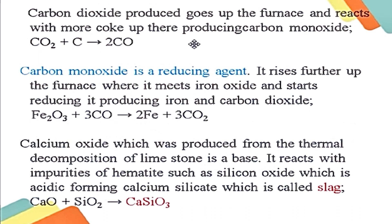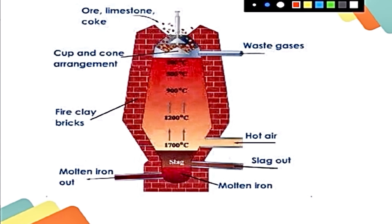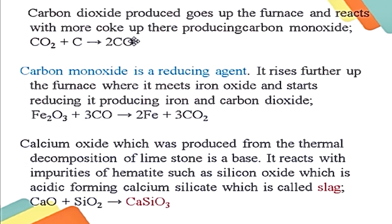Carbon dioxide produced goes up the furnace and reacts with more coke, producing carbon monoxide: CO2 + C → CO. Carbon monoxide is the real reducing agent. Please write down the equations after this explanation.